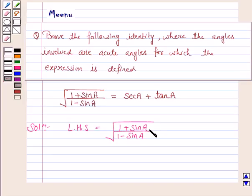So multiply numerator and denominator by 1 plus sine A.